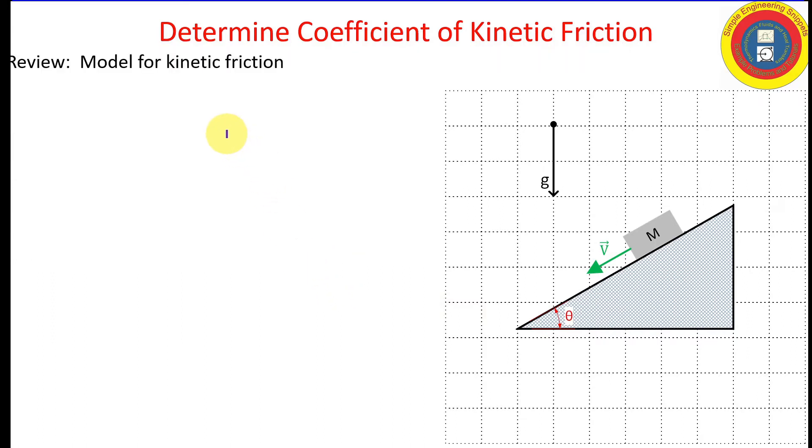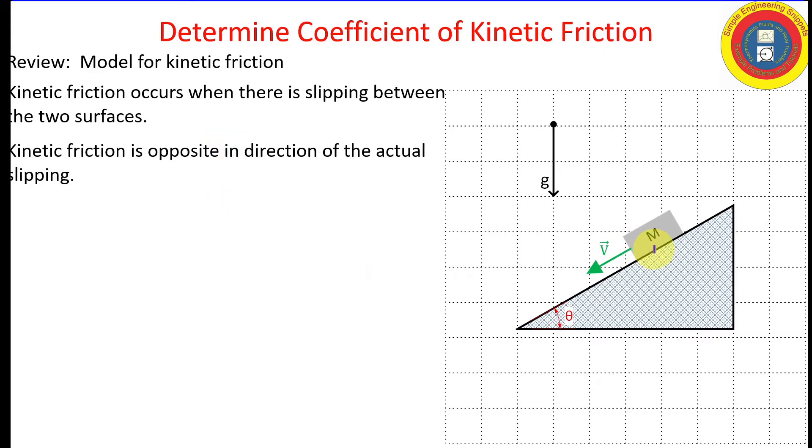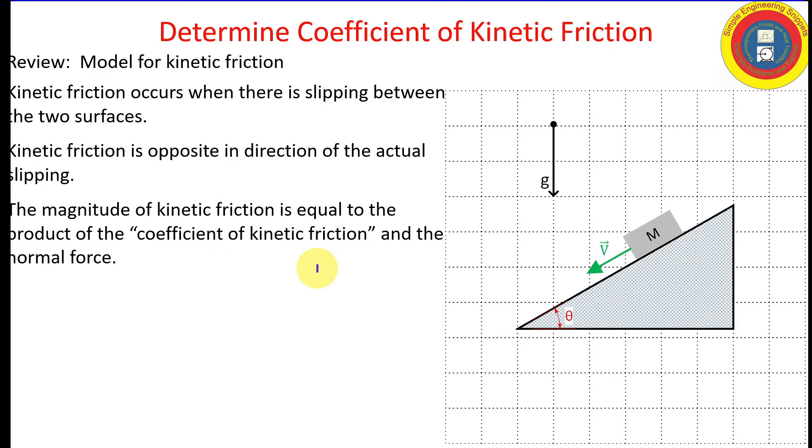Let's do a quick review of the models for kinetic friction. Kinetic friction occurs when there's slipping between the two surfaces. Kinetic friction acts in the opposite direction of the actual slipping. The magnitude of kinetic friction is equal to the product of the coefficient of kinetic friction, mu sub k, and the normal force. And we're going to go through a simpler example to better clarify those terms.